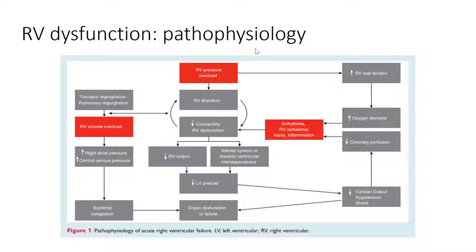We'll now dive into the pathophysiology of RV dysfunction in the acute setting and what mechanisms lead to acute right ventricular failure. Initially, RV pressure overload may lead to dilatation, decreased contractility, and subsequent RV dysfunction. Downstream effects include tricuspid and pulmonary regurgitation in the chronic term. Acutely, as the RV becomes more volume overloaded, you get increased right atrial pressure and central venous pressure, leading to systemic vascular congestion — elevated JVP, pedal edema, hepatic congestion — and potentially organ dysfunction. Additionally, decreased contractility and RV dysfunction may cause decreased RV output, altered systolic or diastolic ventricular interdependence, decreased preload, decreased cardiac output, and a shock-like state with hypotension.